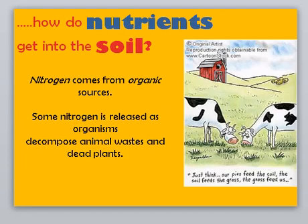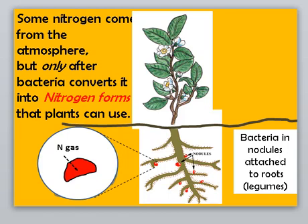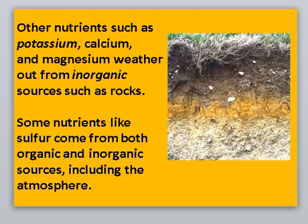How do nutrients get into the soil? Nitrogen comes from organic sources. Some nitrogen is released as organisms decompose — animals, waste, and dead plants. Some nitrogen comes from the atmosphere, but only after bacteria converts it into forms that plants can use — bacteria in nodules attached to roots. Other nutrients such as potassium, calcium, and magnesium come from inorganic sources such as rocks. Some nutrients like sulfur come from both organic and inorganic sources, including the atmosphere.